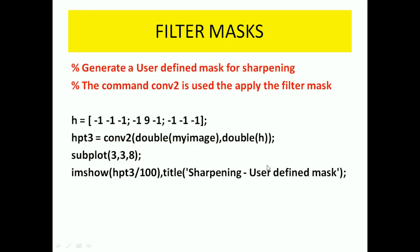Next, here we are applying the sharpening filter. Again here we are using the mask for a sharpening filter — this is the matrix of the sharpening filter. Again we are using the 2D convolution MATLAB command to convolve my_image with the sharpening filter. And we are using subplot(3,3,8), so the position of that image is 8, and we are using the imshow MATLAB command to show that output image.